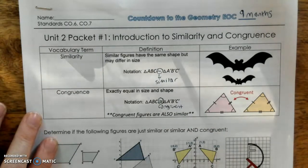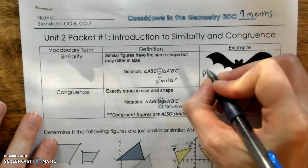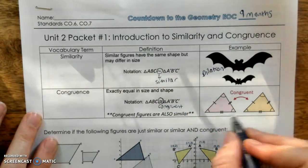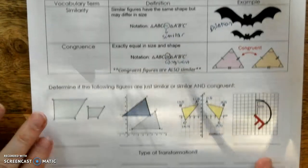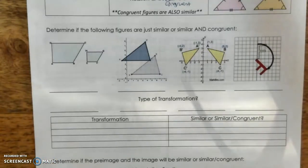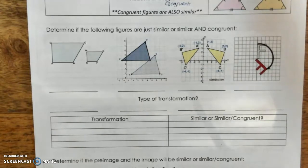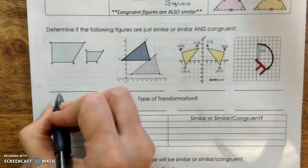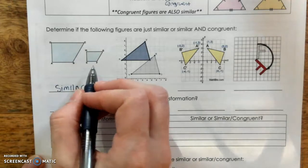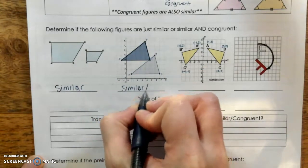This example should look like a type of transformation we've heard about — dilation. For congruent figures, all sides and all angles are equal; congruent figures are exactly the same in size and shape. Go ahead and determine if the following figures are just similar or similar and congruent. Remember, if they're congruent, they're also similar. Pause the video and try to label similar or similar and congruent for these four examples. This one is just similar — same shape, different size. These two triangles are similar and congruent.